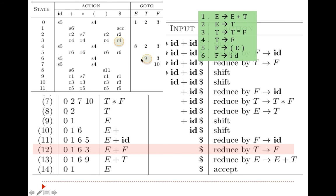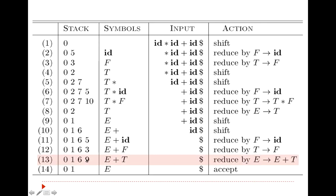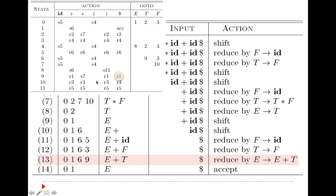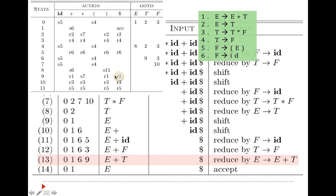Then the next is 9 and dollar. 9 and dollar gives reduce by rule number 1. Reduced by rule number 1, that is e gives e plus t. So e plus t is replaced by e. Because there are three symbols on the right-hand side, we pop states 1, 6, and 9. What remains on the stack is 0. We refer to 0 and e, which gives state 1, so 1 is pushed onto the stack.